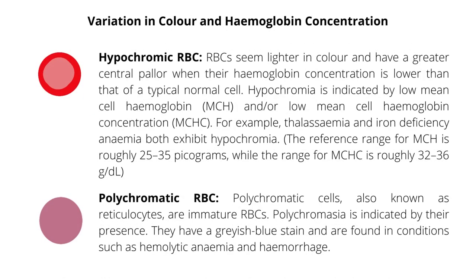Red blood cells seem lighter in color and have a greater central pallor when their hemoglobin concentration is lower than that of a typical normal cell. Hypochromia is indicated by low mean cell hemoglobin and/or low mean cell hemoglobin concentration. For example, thalassemia and iron deficiency anemia both exhibit hypochromia.